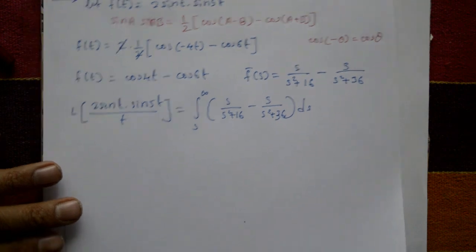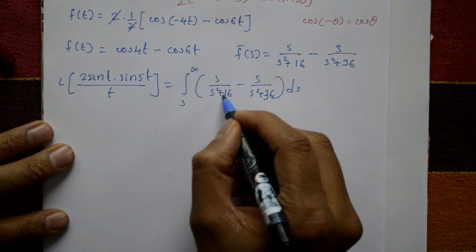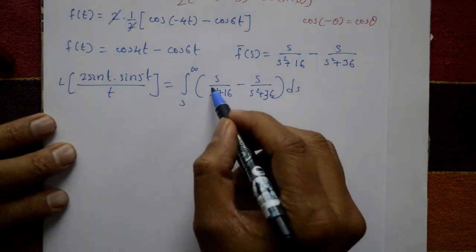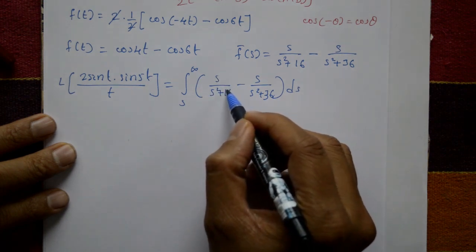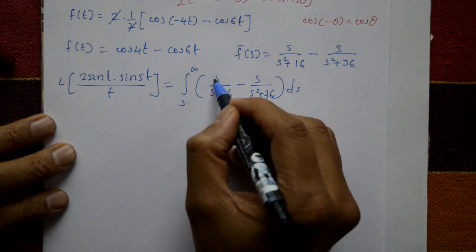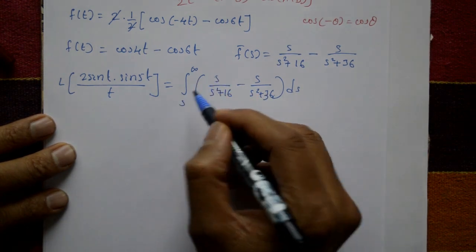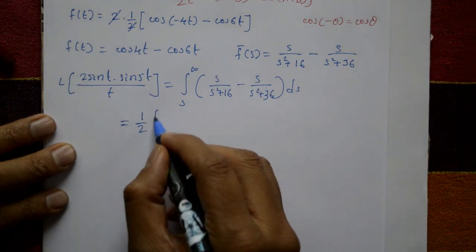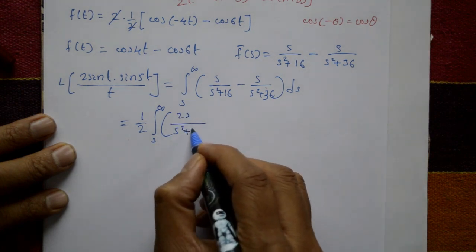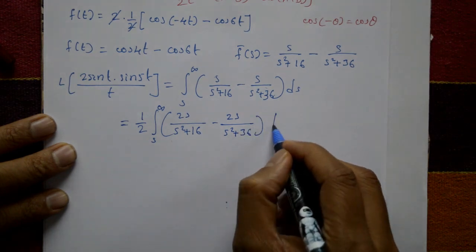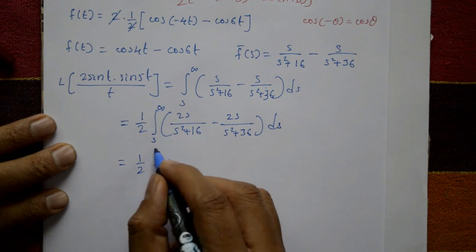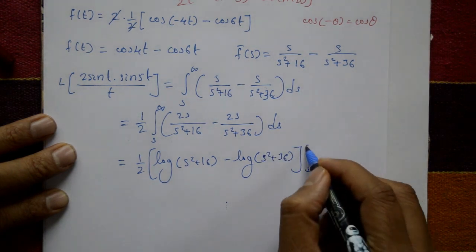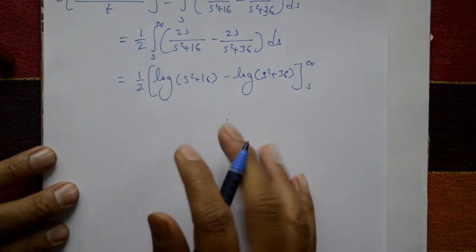This cannot be directly integrated by a standard formula. So we use the log-of-denominator technique: differentiation of denominator equals numerator. Multiplying and dividing by 2 to match the derivative form, we get one-half times the integral from s to infinity of [2s over (s² plus 16) minus 2s over (s² plus 36)] ds. Taking the log of denominators: this equals one-half times [log(s² plus 16) minus log(s² plus 36)] with limits s to infinity.